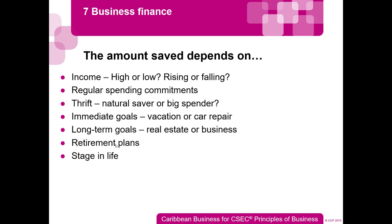The amount you save depends on your income. If you have a high income, you can save a higher amount — someone making a million a year saving 10% saves far more than someone making $80,000 saving 10%. Your regular spending commitments also matter: fewer commitments means you save more, more commitments means you save less. And of course, if you're naturally thrifty, frugal, or economical, you'll save more.